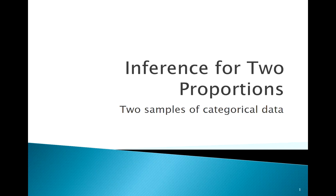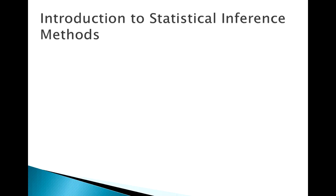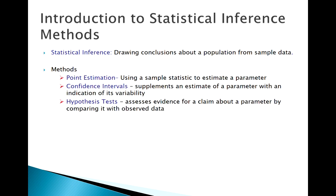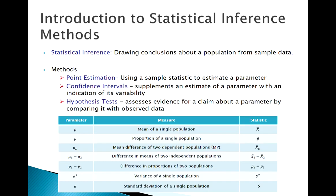Welcome back. Today we're going to extend the ideas we've already been talking about into inference for two samples of categorical data. We know what inference is, we know about all these different methods of inference, and we're working down this list. We know how to deal with a single sample of proportions, and now we're going to use some ideas from one sample mean to two sample means.